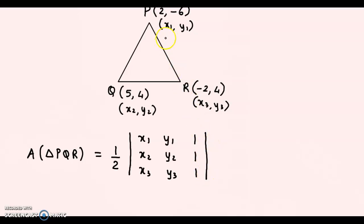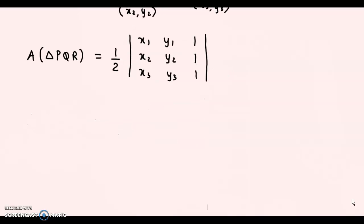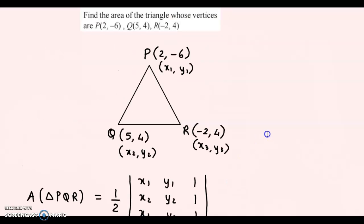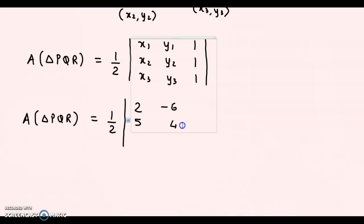Now we simply have to substitute the values. Since x₁, y₁ is (2, -6), the area of triangle PQR equals one-half times the determinant: 2, -6, 1; 5, 4, 1; -2, 4, 1.